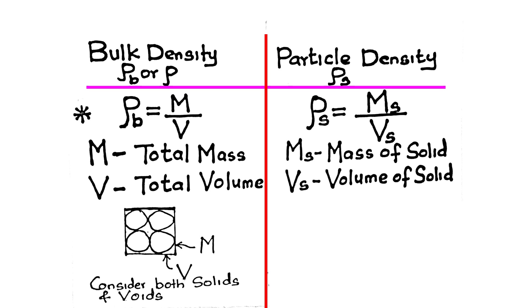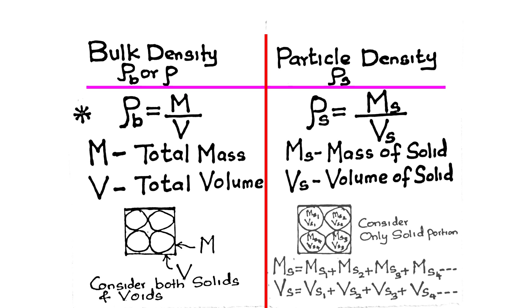In bulk density, consider total, i.e., both solid and voids. In particle density, consider only solid portion.